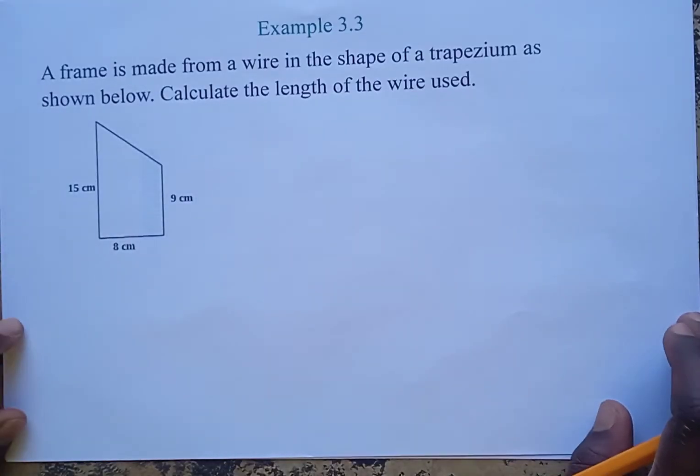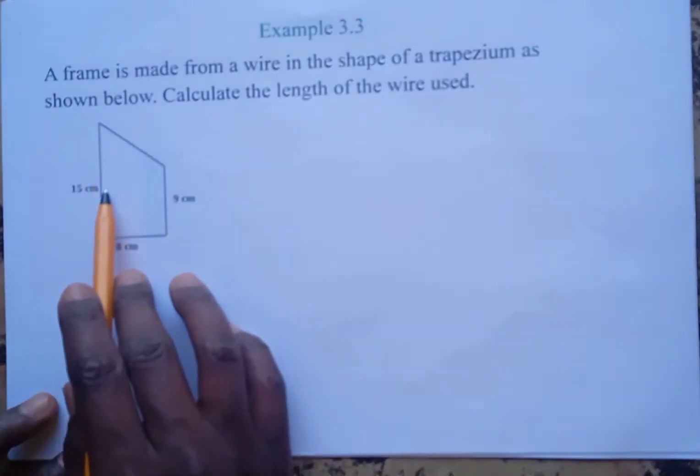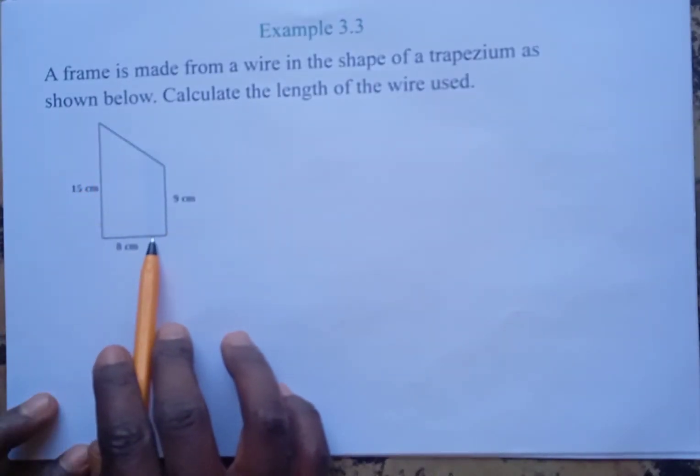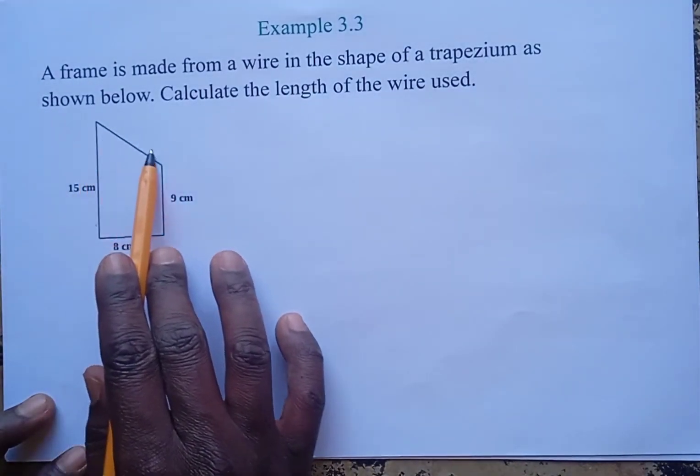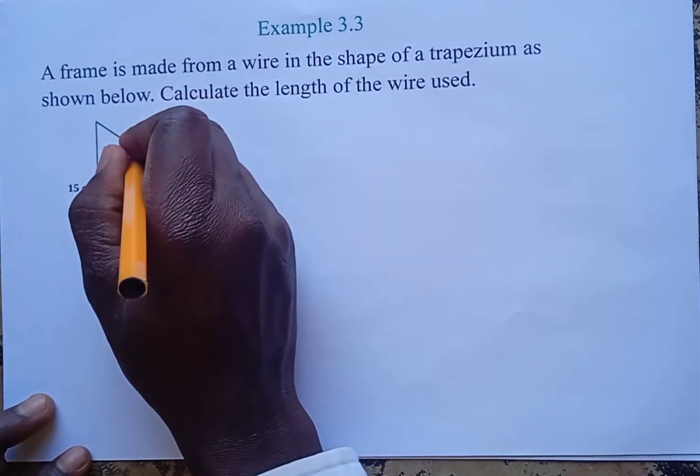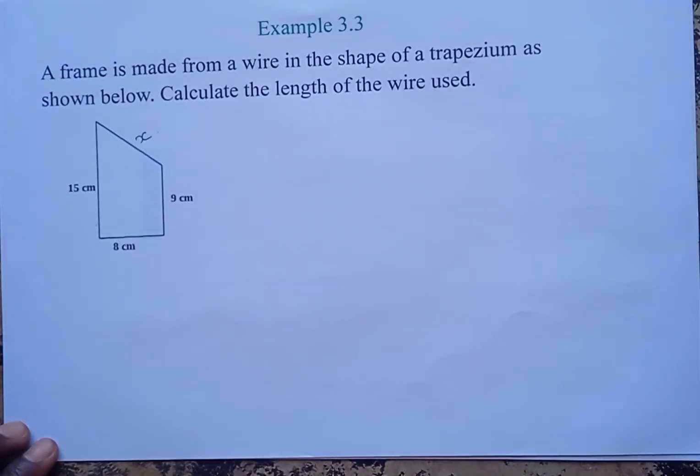Hello and welcome. A frame is made of wire in the shape of a trapezium as shown below. Calculate the length of the wire used. Looking at the trapezium, we have the sides 15 centimeters, 8 centimeters, and 9 centimeters. Then we have an unknown side, let's call that side X.